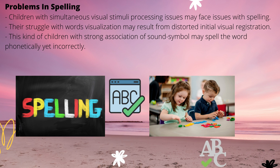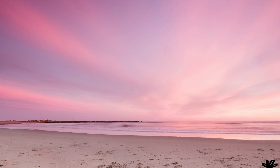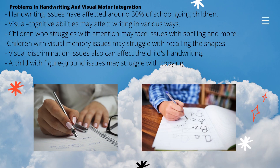Now coming to the problems in spelling. Children with simultaneous visual stimuli processing problems may face spelling issues. Their struggle with word visualization may also result from distorted initial visual registration. Children with a strong reliance on sound-symbol associations may spell the word phonetically yet incorrectly — for example, the word 'light,' which should be spelled L-I-G-H-T, may instead be spelled L-I-T-E.